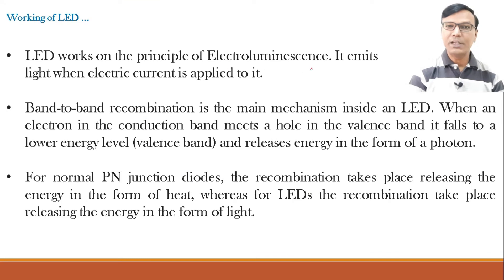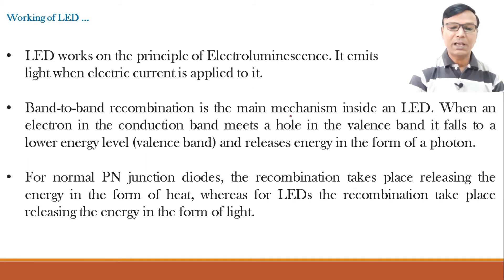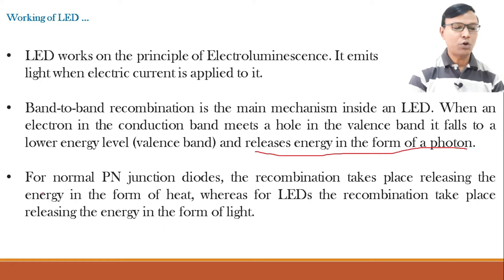LED works on the principle of electroluminescence. Luminescence means emitting light without heating, and electro means when electric current is applied. So whenever electric current is applied, it will emit light. Band-to-band recombination is the main mechanism inside a light emitting diode. When an electron in the conduction band meets a hole in the valence band, it falls to a lower energy level and releases energy in the form of a photon. For a normal p-n junction diode, recombination releases energy as heat, whereas for LEDs it releases energy as light.